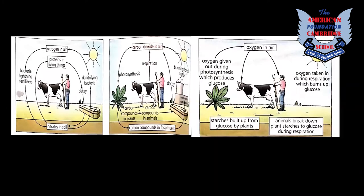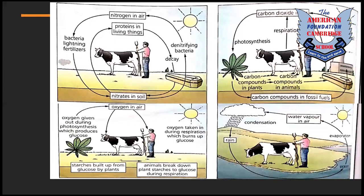Oxygen: the process of photosynthesis followed by respiration recycles the oxygen cycle. Water vapors: water circulates between the air, the oceans, and living things — that is how it is recycled.